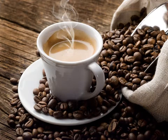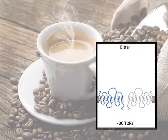Unlike sour and salty, which use membrane channels to trigger the signal, bitter, sweet, and umami sensations are triggered by membrane receptors — GPCRs, or G-protein coupled receptors — that bind with specific substances. Bitter also warns against the intake of potentially noxious or poisonous chemicals, and its receptors are made of T2Rs.